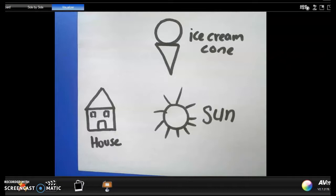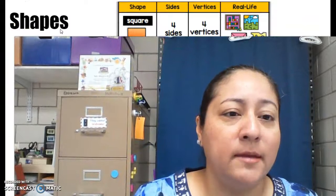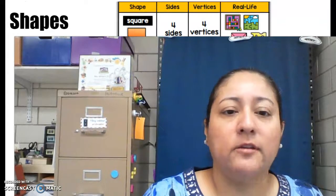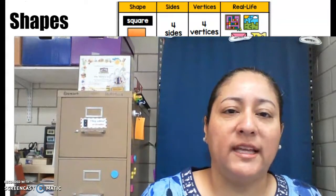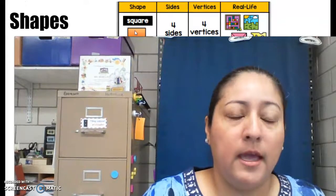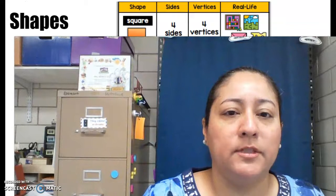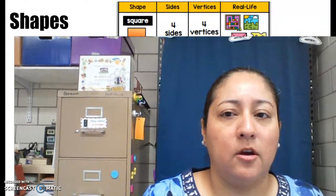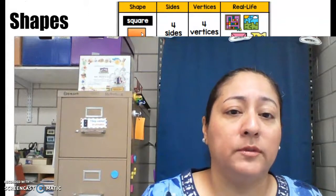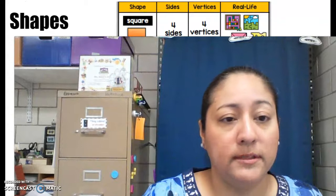Let's review what we learned today. We talked about shapes and looked at a book that had different shapes: square, triangle, circle, rectangle, and oval. We looked at their sides and vertices to recognize each shape. For homework, we're going to use those shapes to make new real-life things — like the sun with a circle, and the house with a square, rectangle, and rectangle as the door.